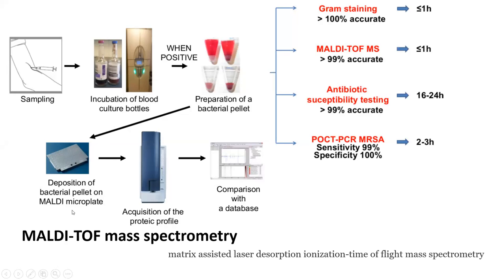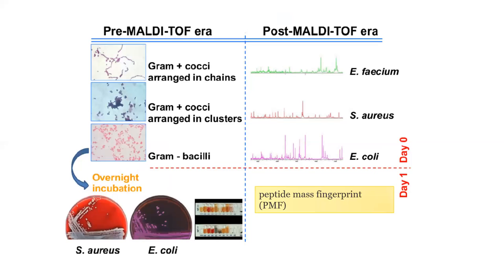MALDI-TOF uses a peptide mass fingerprint method, comparing against an available database to identify bacteria very quickly. A gram stain can also be obtained rapidly from the bacterial pellet, enabling identification of the organism. Antimicrobial sensitivity testing can be performed quickly, and PCR can determine whether a Staphylococcus species is MRSA.